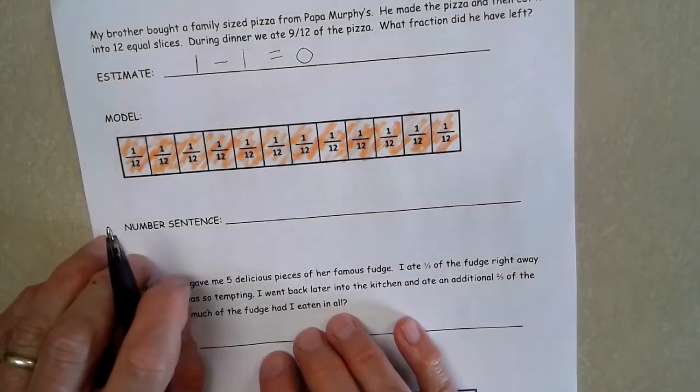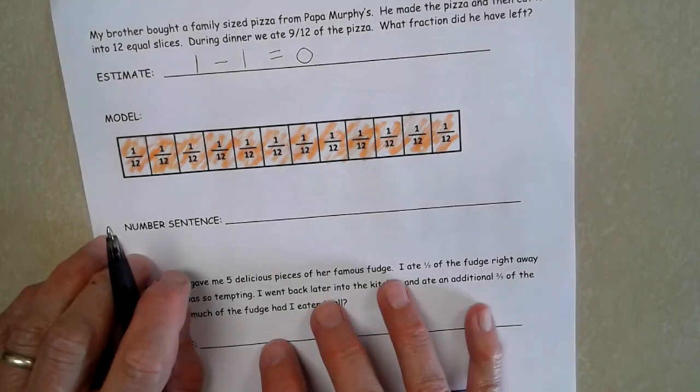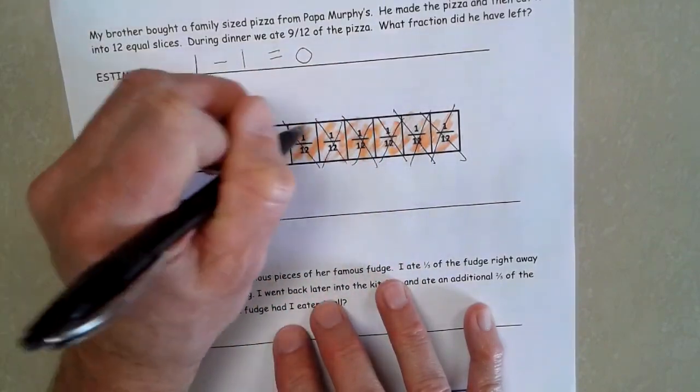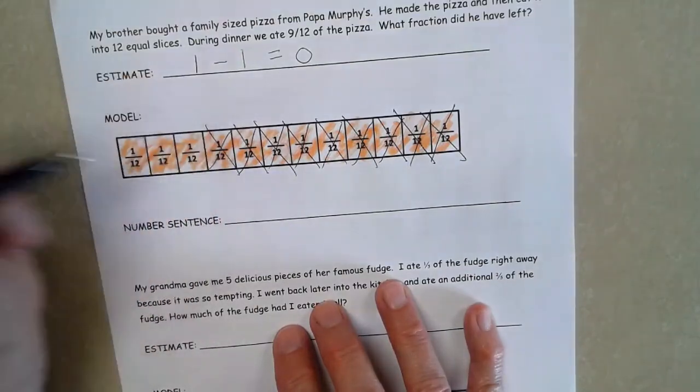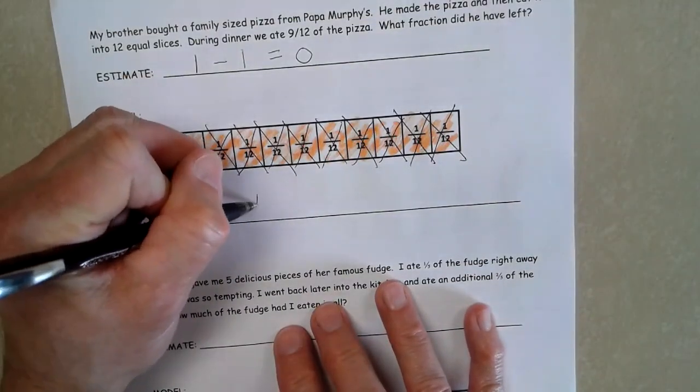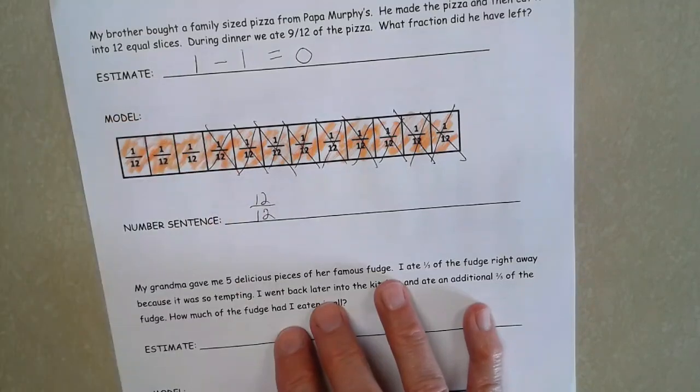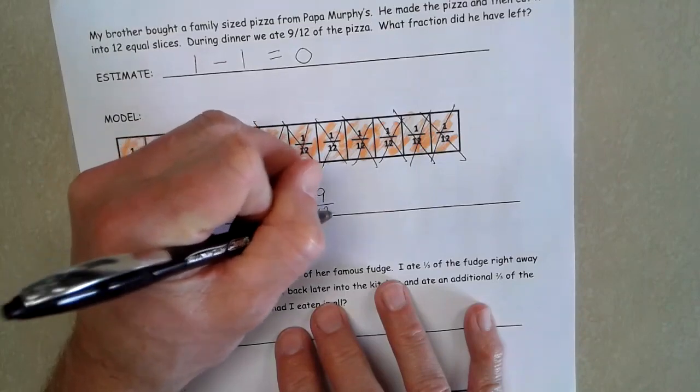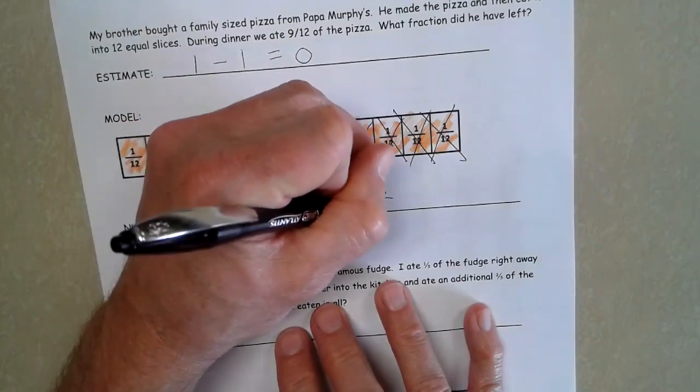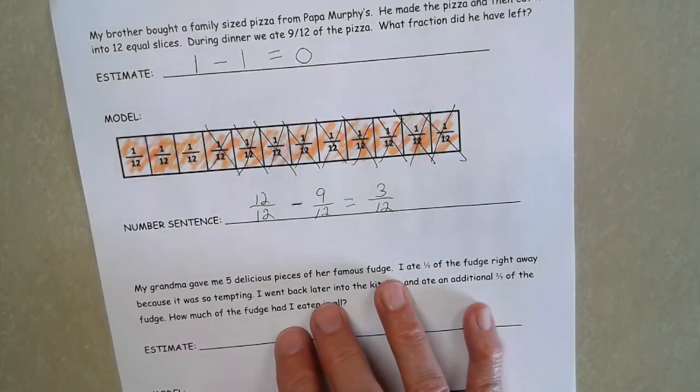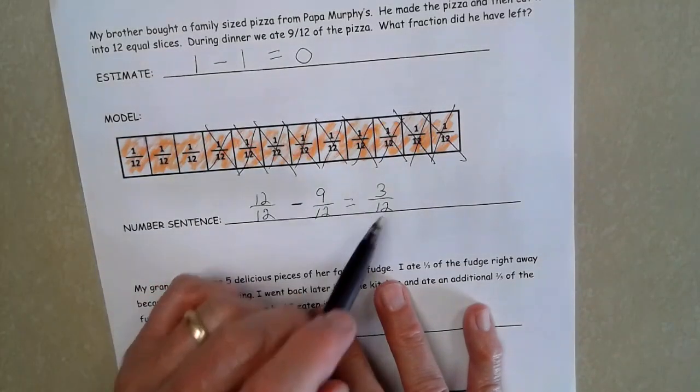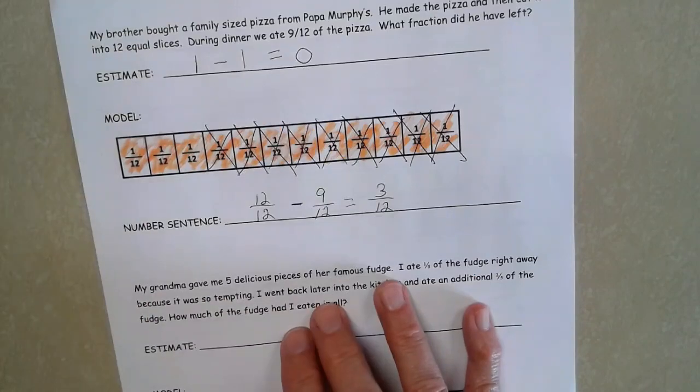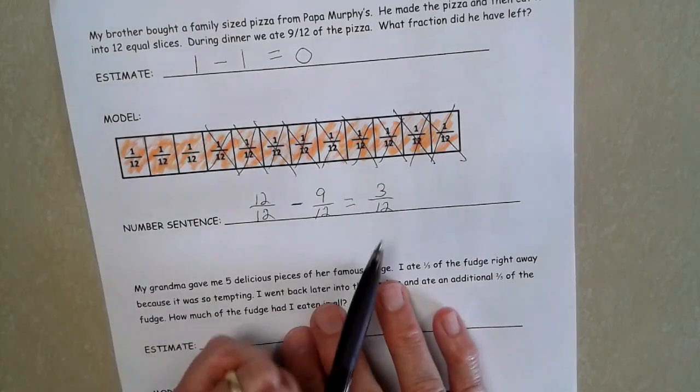So I'm going to go ahead and remove nine, two, three, four, five, six, seven, eight, nine. So I had 12 twelfths for my number sentence minus nine twelfths will give me three twelfths when I'm done. One, two, three. And three twelfths is closer to zero than it is to a half, so we're going to say we're in the right ballpark.